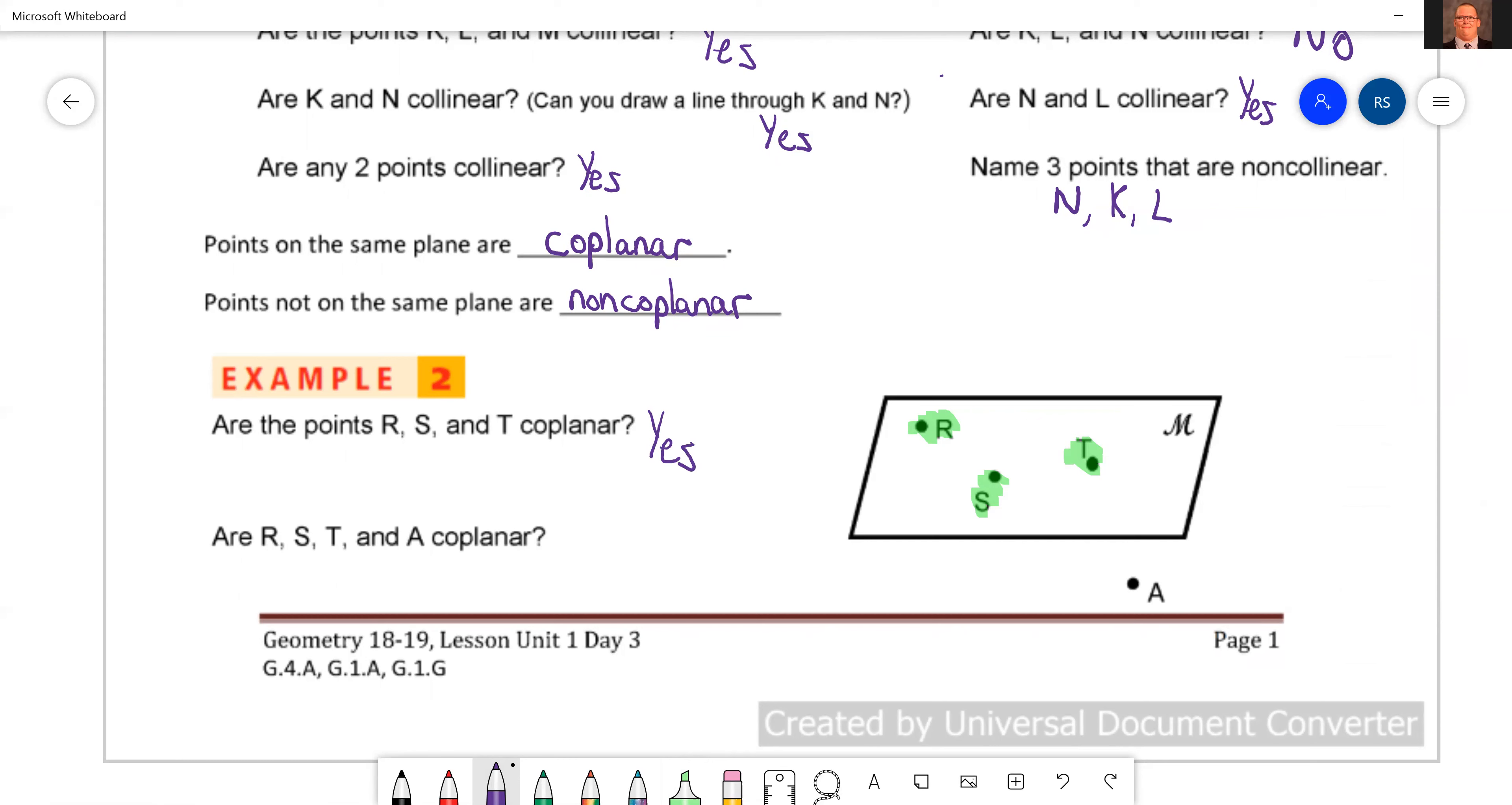Now they ask about R, S, T, and A, so now we're including A. Is A in the same shape? No, so we'll say it's not coplanar, so no. Okay, so we're done with the front of the notes. Now let's flip over to the back.